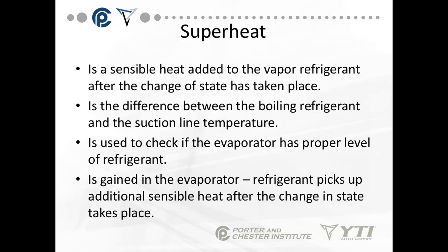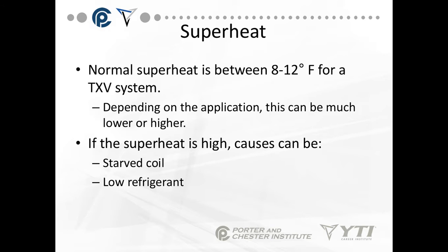Superheat goes along with the evaporator, which is why we're talking about it in this lesson. Superheat is a sensible heat that's added to the vapor refrigerant after a change of state has taken place. It's the difference between the boiling refrigerant and the suction line temperature, and it's used to check if the evaporator has a proper level of refrigerant. Superheat is gained in the evaporator as refrigerant picks up additional sensible heat after the change of state from liquid to vapor. Normal superheat for a TXV system is between 8 and 12 degrees.